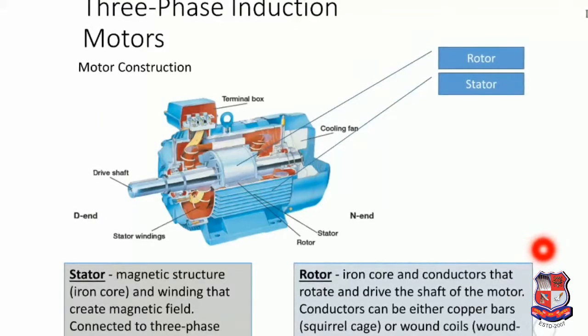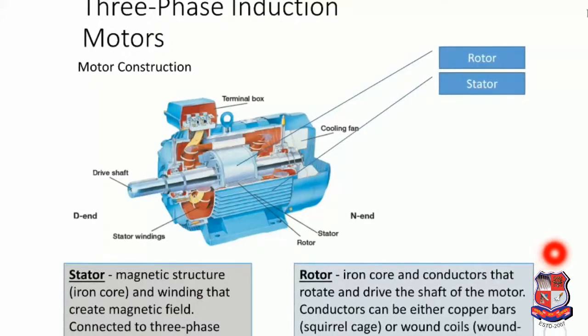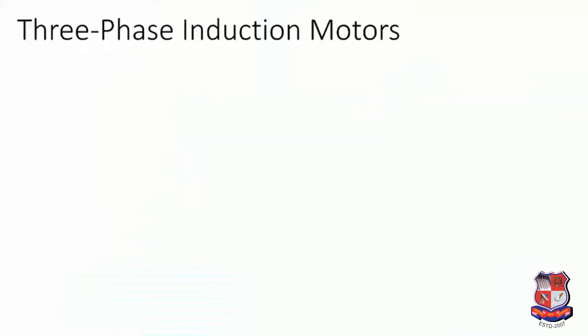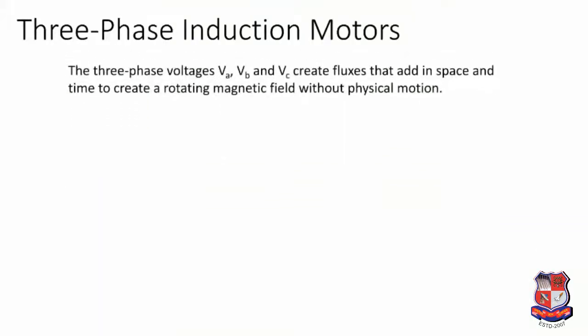The rotor conductors can be either copper bars in a squirrel cage, or wound coils. This is the three-phase induction motor.